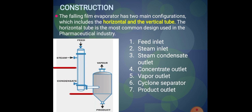There is a steam inlet where steam is introduced as the heating media, a vapor outlet in the cyclone separator, and a product outlet. The cyclone separator is an equipment used in pharmaceutical industries for the separation of gases and liquids — it separates the concentrated product from vapors. There is also a feed inlet at the top of the heat exchanger and a condensate outlet for removal of steam condensate.